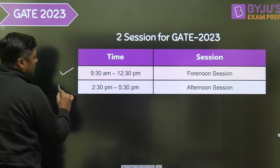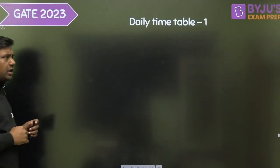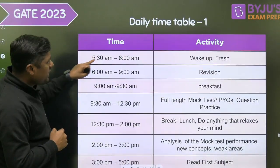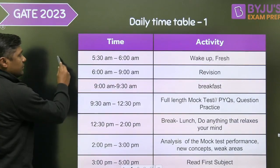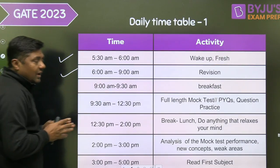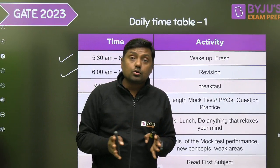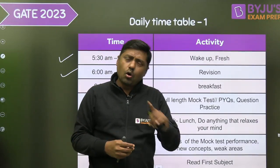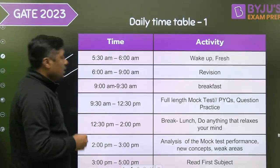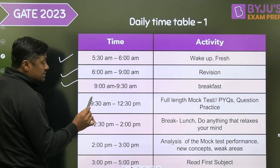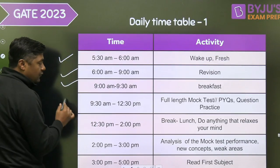According to my experience, here is the timetable for the forenoon session. Wake up time is 5:30 to 6 AM. From 6 to 9 AM is revision — revise from your short notes, formula notes, and concept notes, covering all subjects. Then take your breakfast, and after that go for a mock test just like the actual exam.